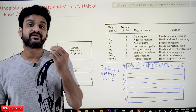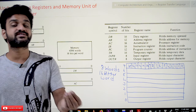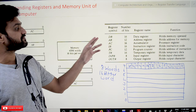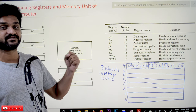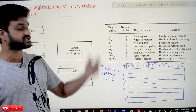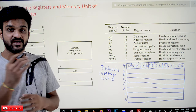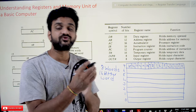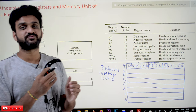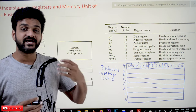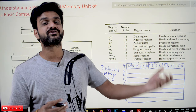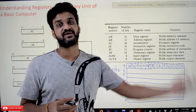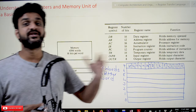We suggest you to remember all these terminologies. DR means data register, IR means instruction register. Try to thoroughly remember this terminology — we will get habituated to it in our later videos.